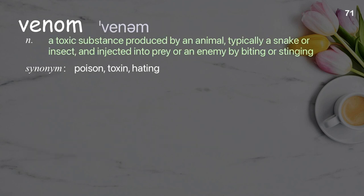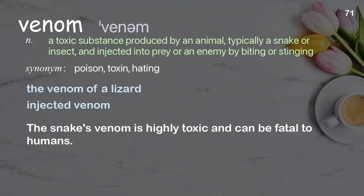Venom. A toxic substance produced by an animal, typically a snake or insect, and injected into prey or an enemy by biting or stinging. Examples: the venom of a lizard, injected venom. The snake's venom is highly toxic and can be fatal to humans.